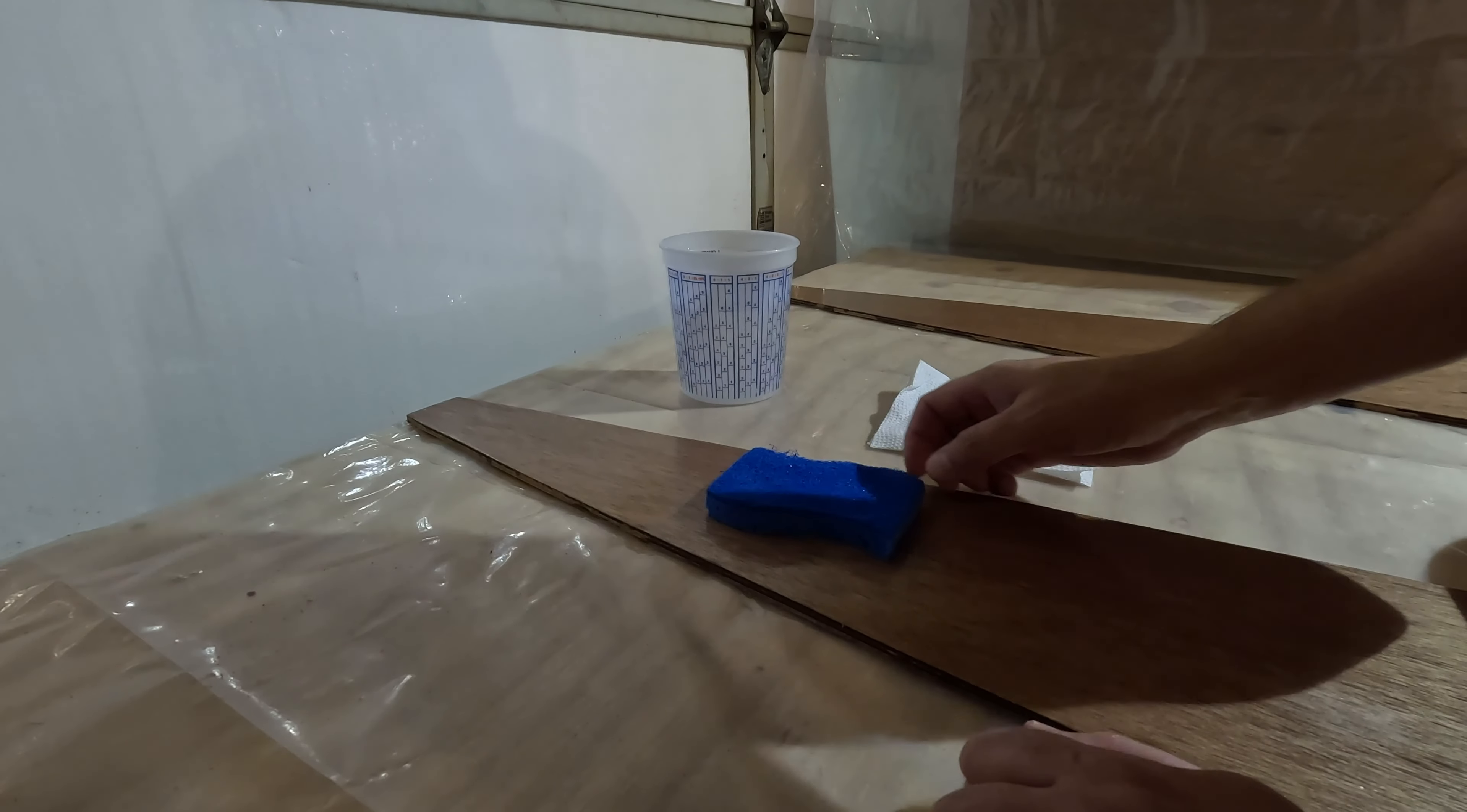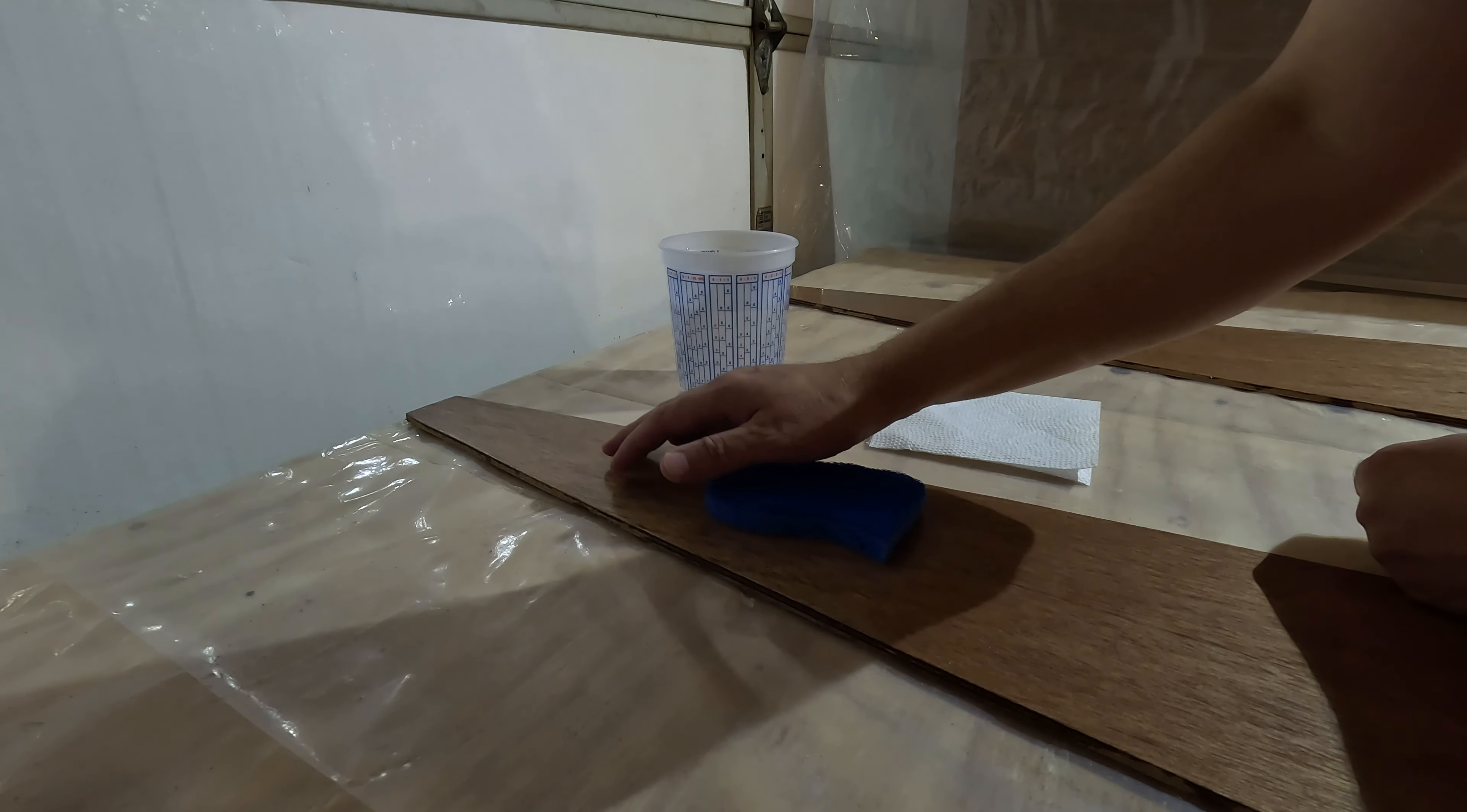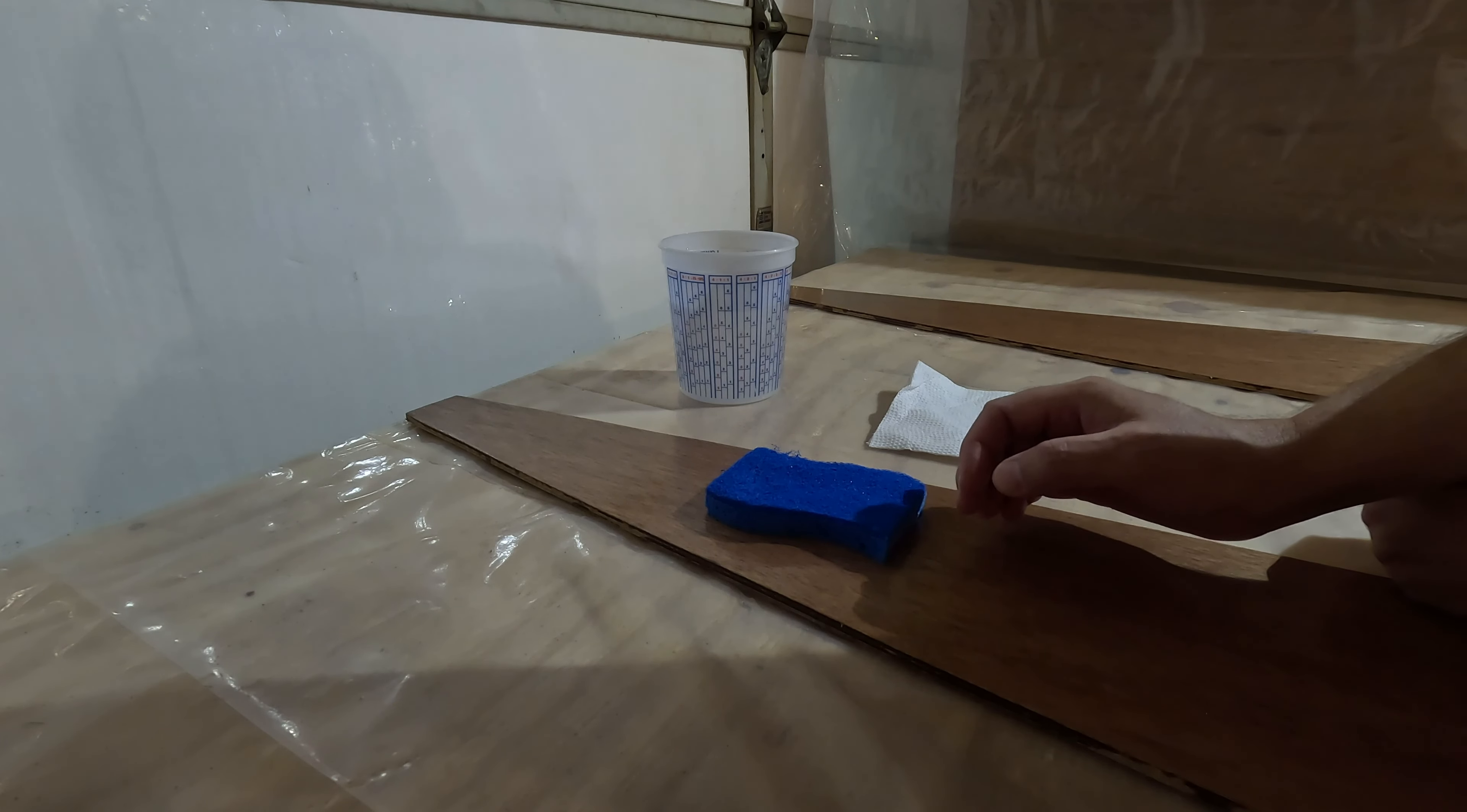Here's a step that I want to talk about that up until now I haven't really needed to worry about it so much, although I probably should have. So this is something I'm going to correct going forward and that is the need to remove the amine blush from the surface of cured epoxy before doing any sanding.